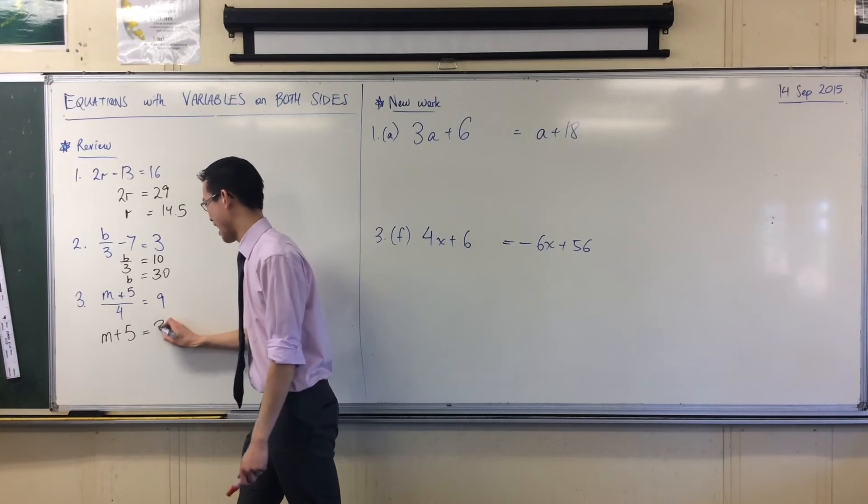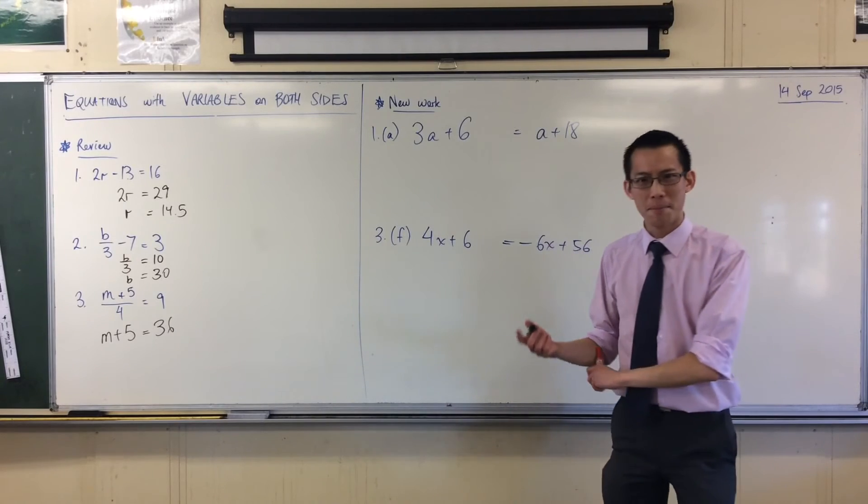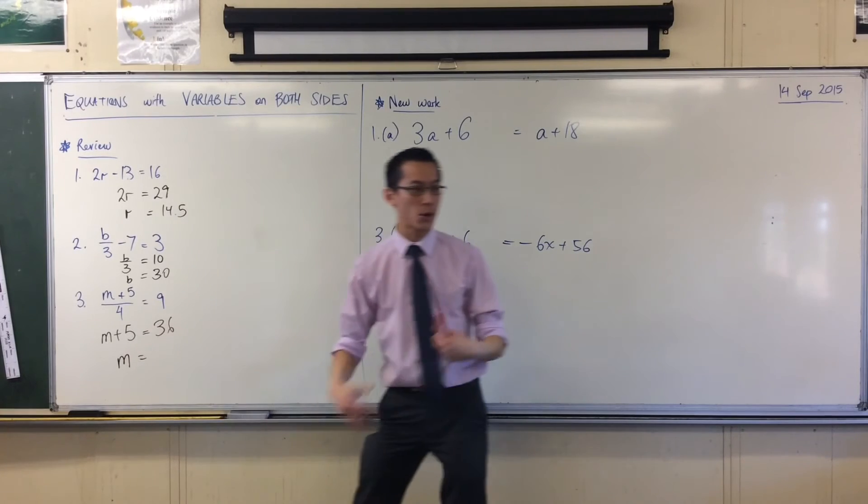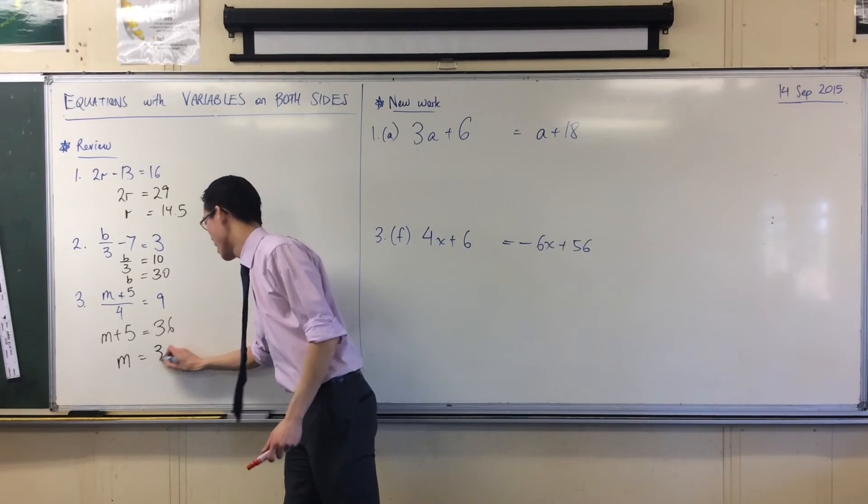Okay. Fantastic. And you can all see what he's done, right? Where did the 36 come from? Multiplying by 4. Fantastic. And then to get rid of that plus 5, I'm going to use the opposite of plus 5. Minus 5. Very good. So that's 31.